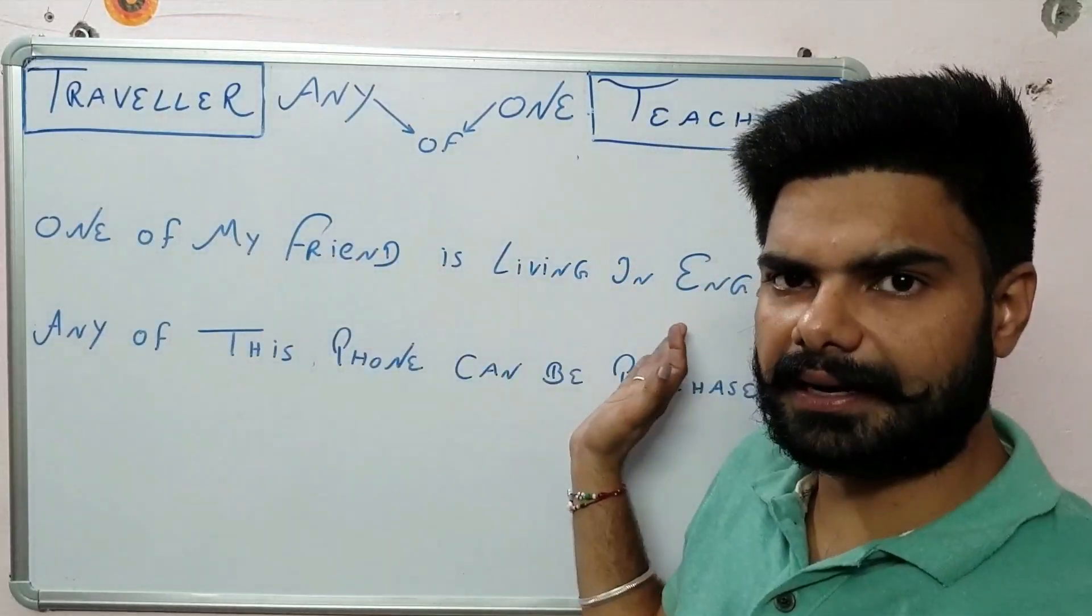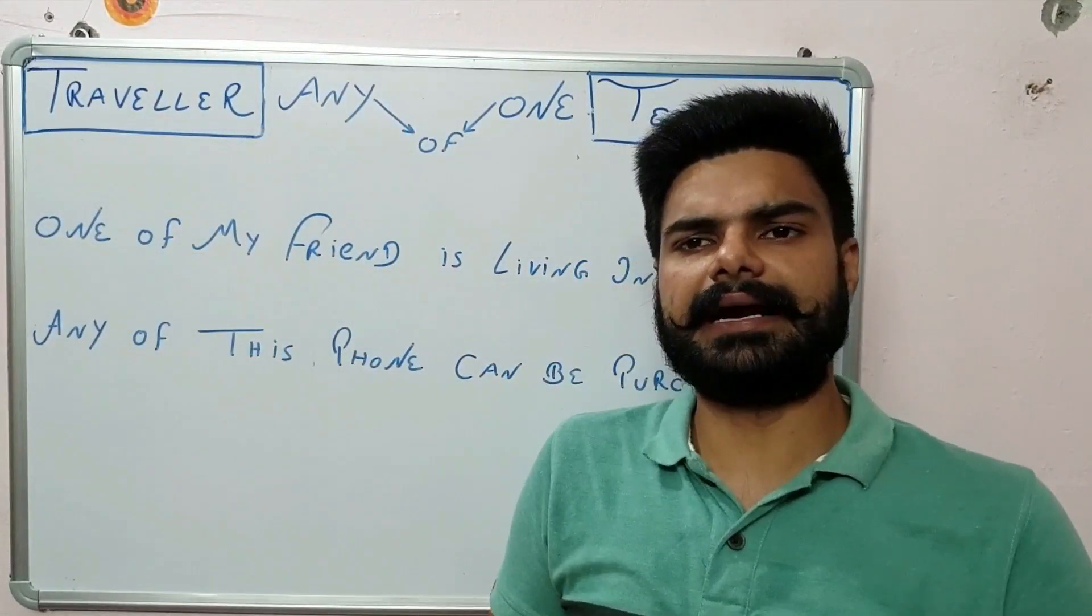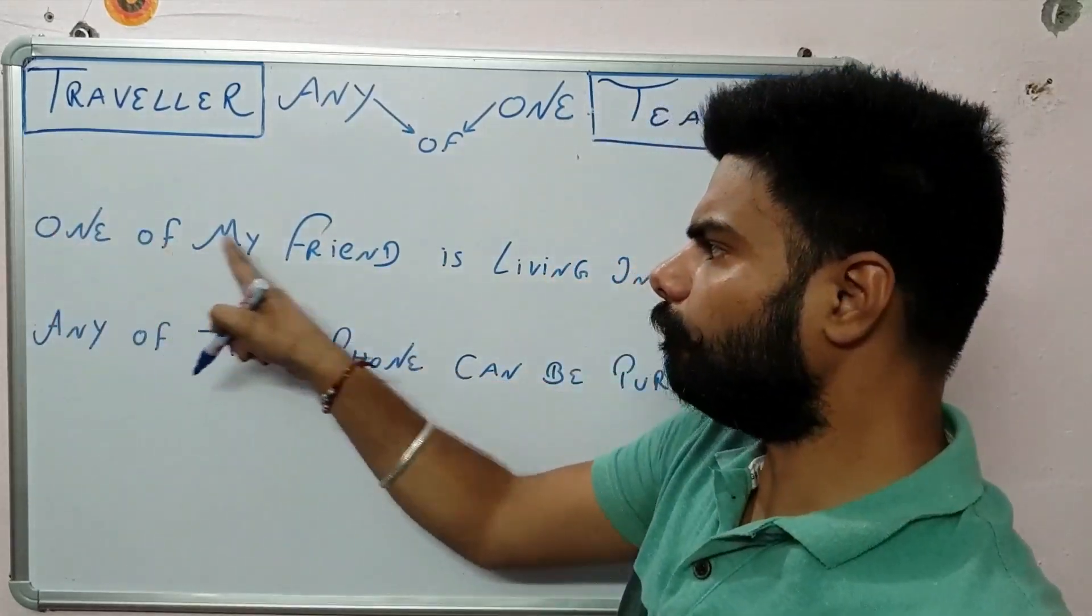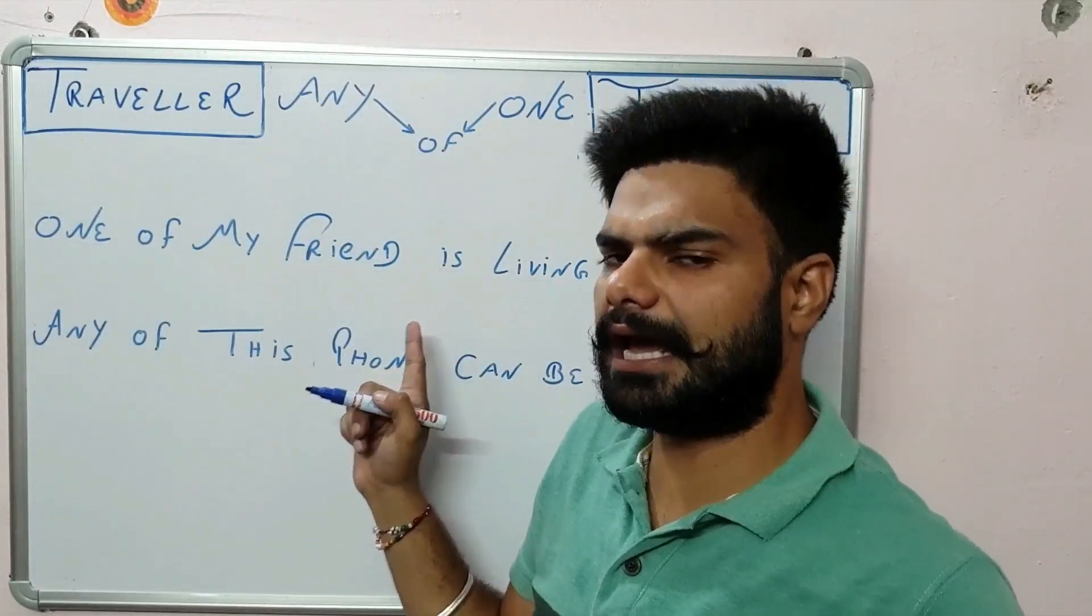One of my friend is living in England. Remember this thing that if you are using one of my friend, it is the wrong version of English language.